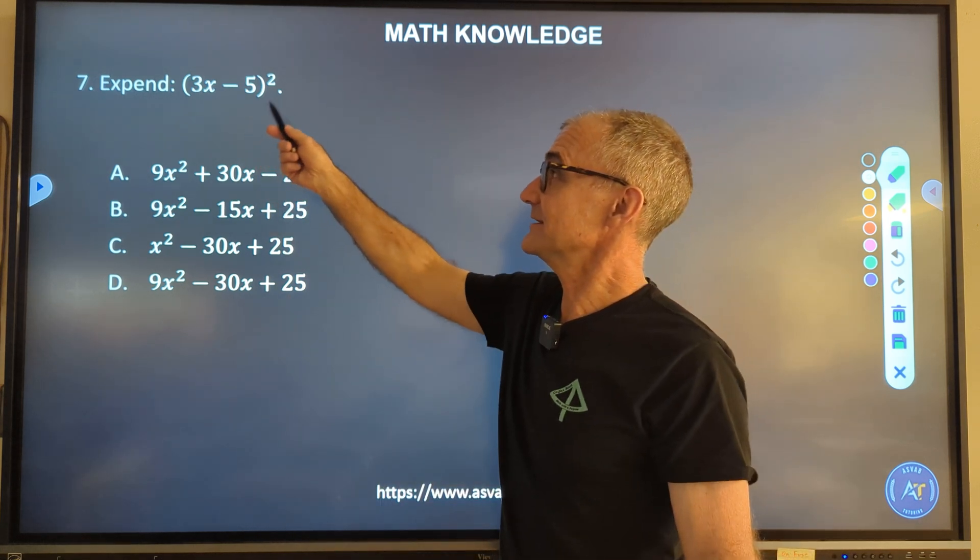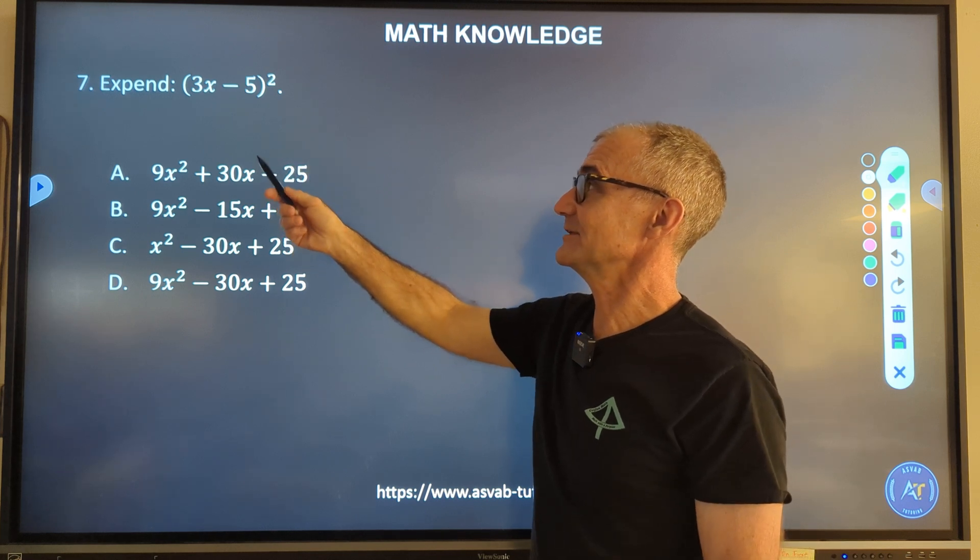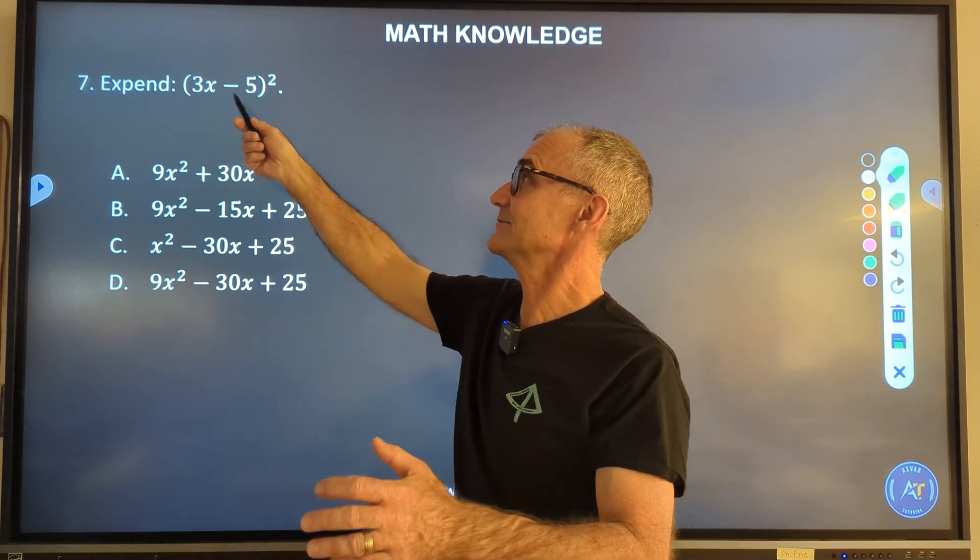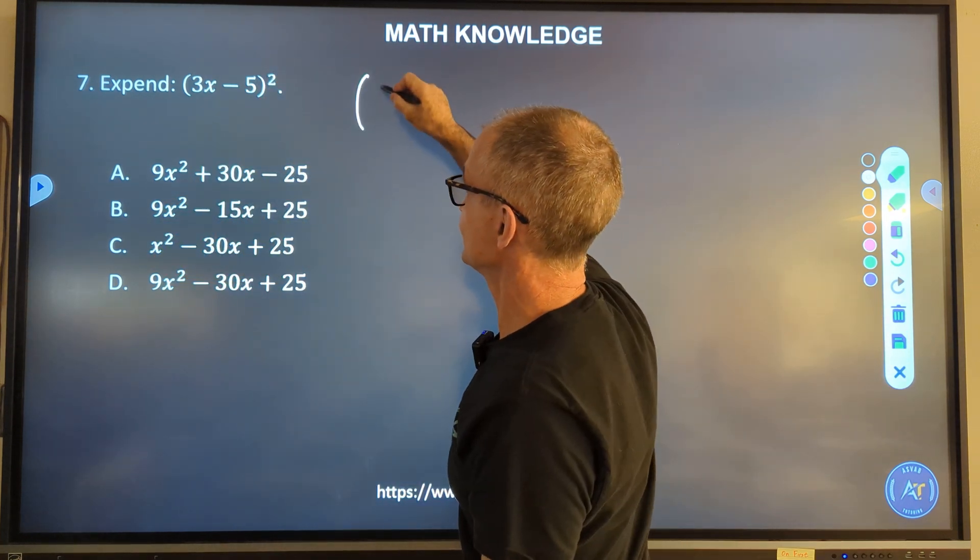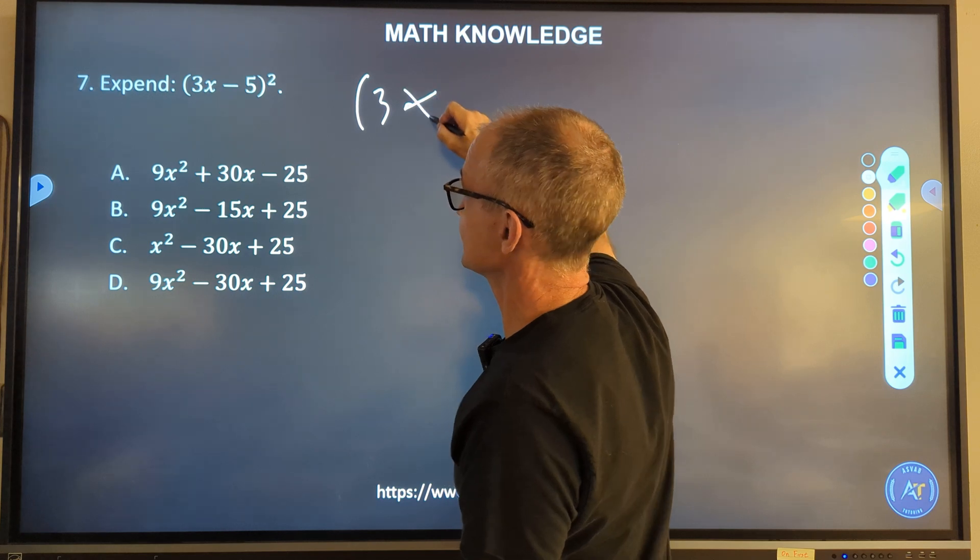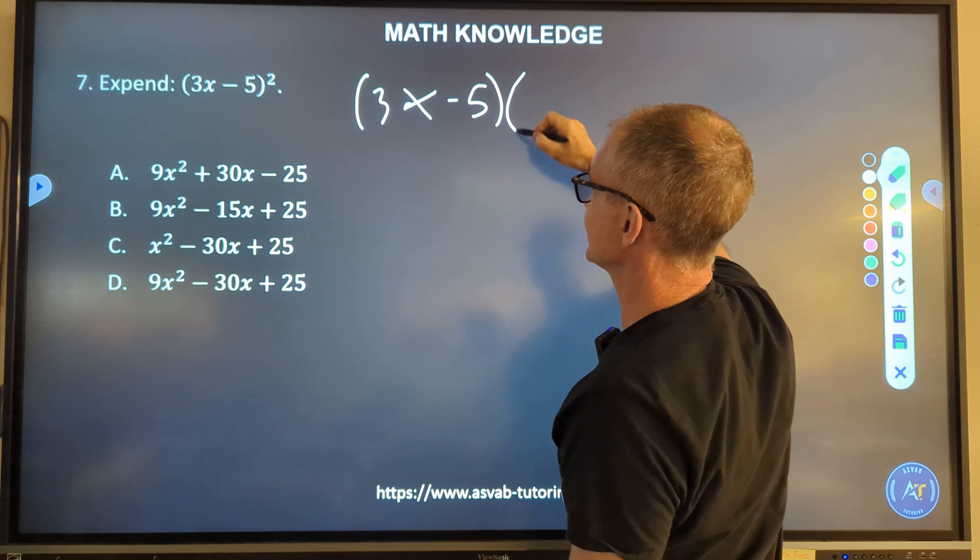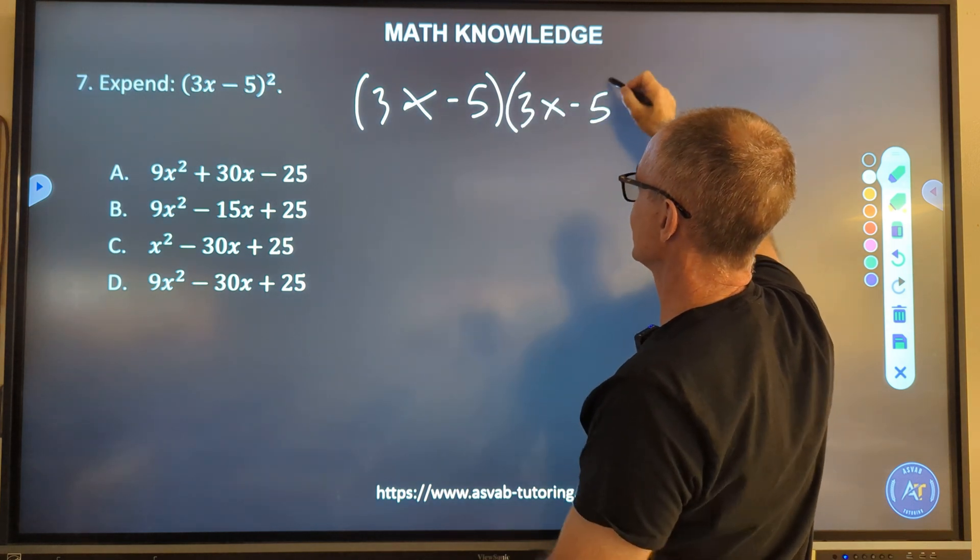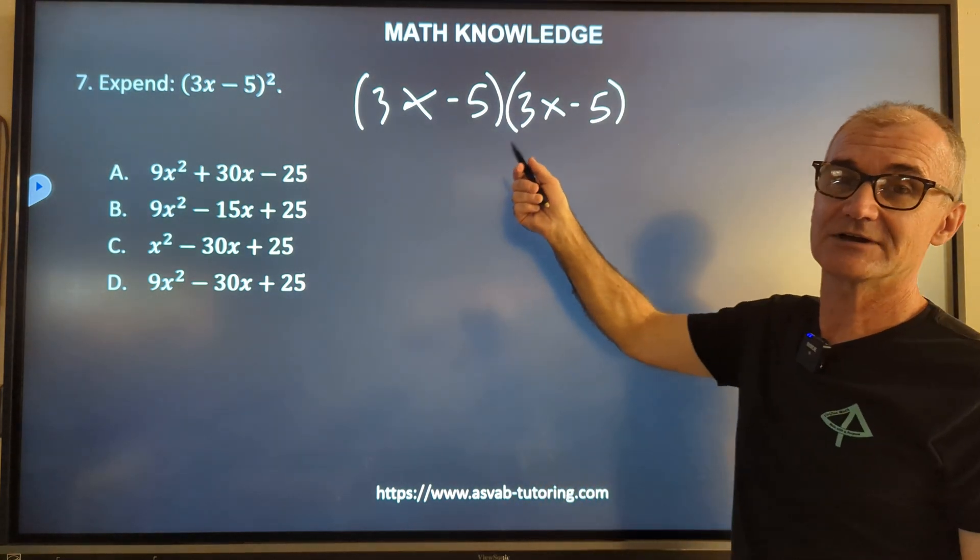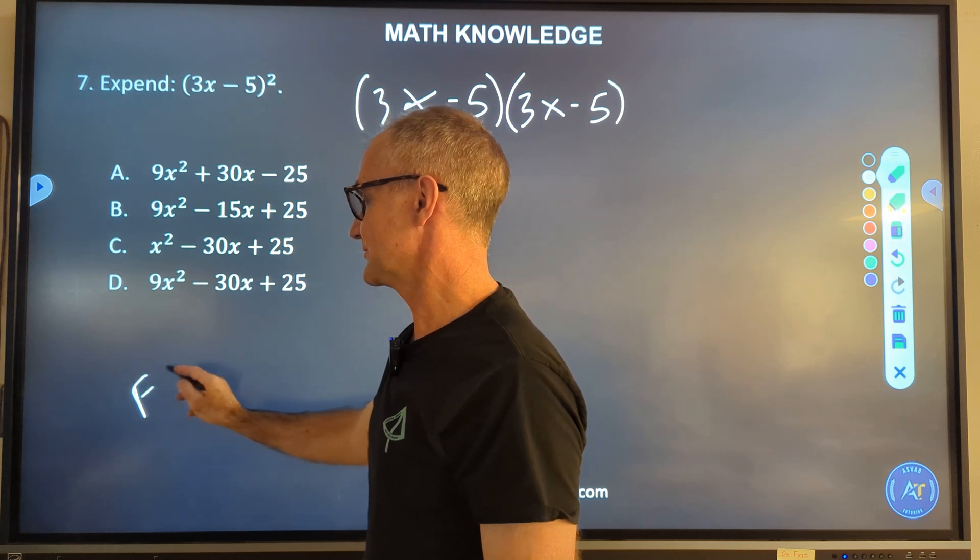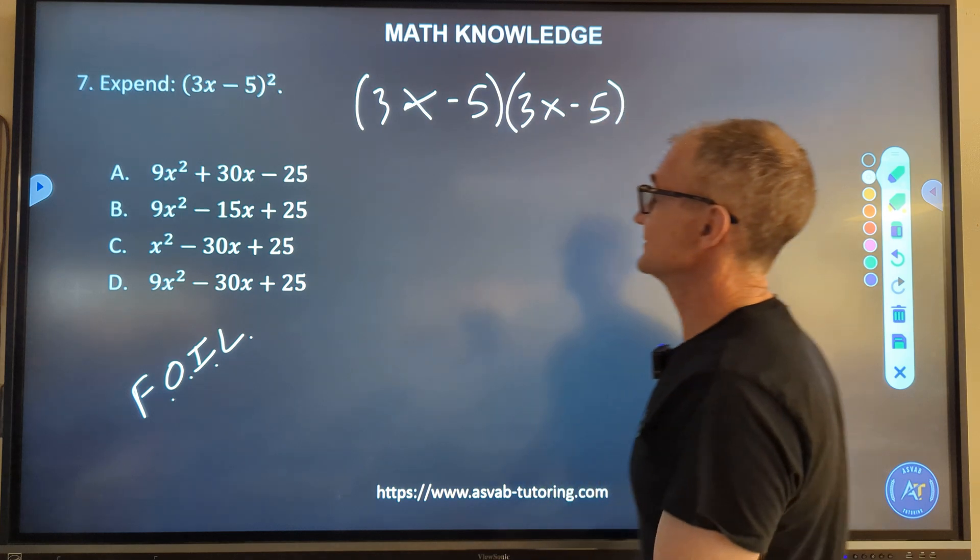Number 7, expand this. That's a typo as well, it's supposed to be expand. The trick on this one, this is not 3x squared minus 5 squared. I don't just distribute that square through the quantity. That thing is saying 3x minus 5 quantity squared. So 3x minus 5 times the quantity 3x minus 5. The thing about this is you've got to FOIL it out. F-O-I-L. And that stands for multiplying the first terms, the outer terms, the inner terms, and the last terms. Let's do that.